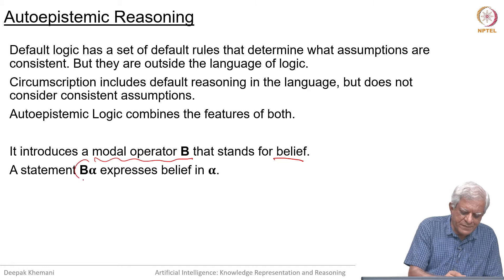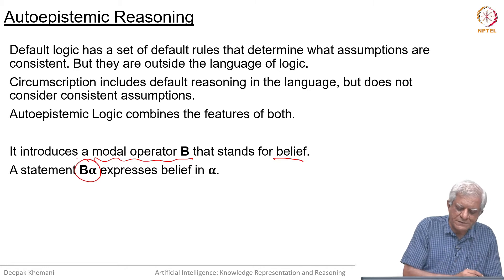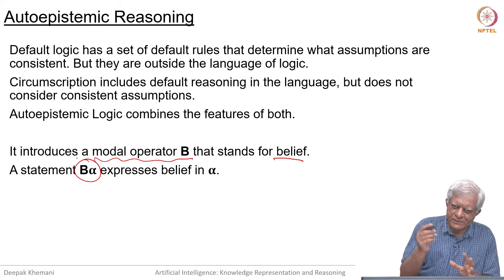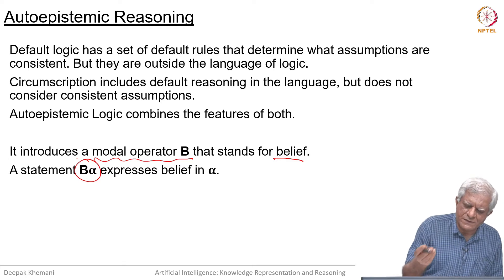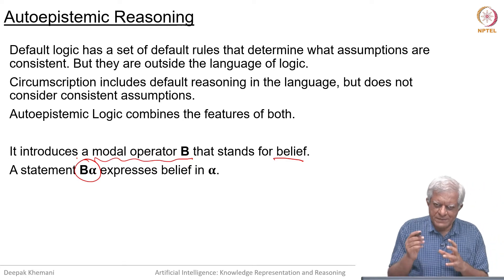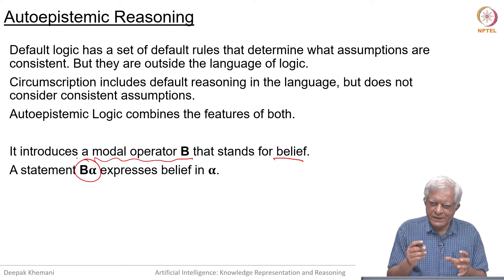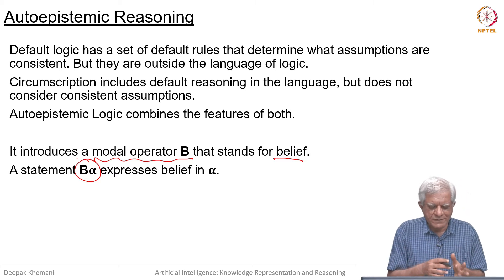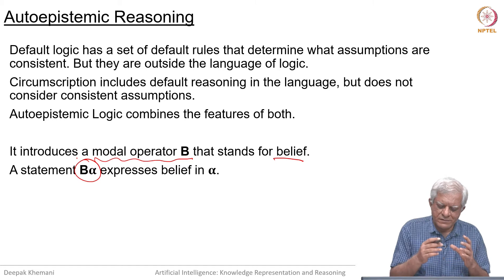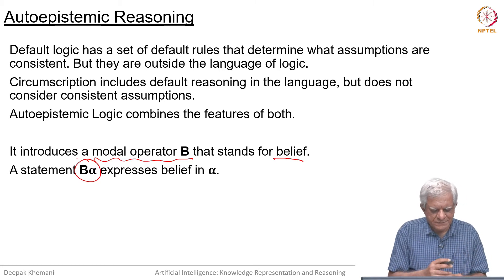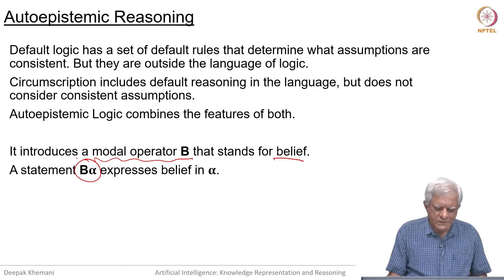So when we say B(alpha), alpha is a sentence from whichever language you are looking at — it can be propositional logic, it can be first-order logic. When you say B(alpha), that sentence is an argument to this modal operator B, and it says that we believe in alpha, we believe that alpha is true.